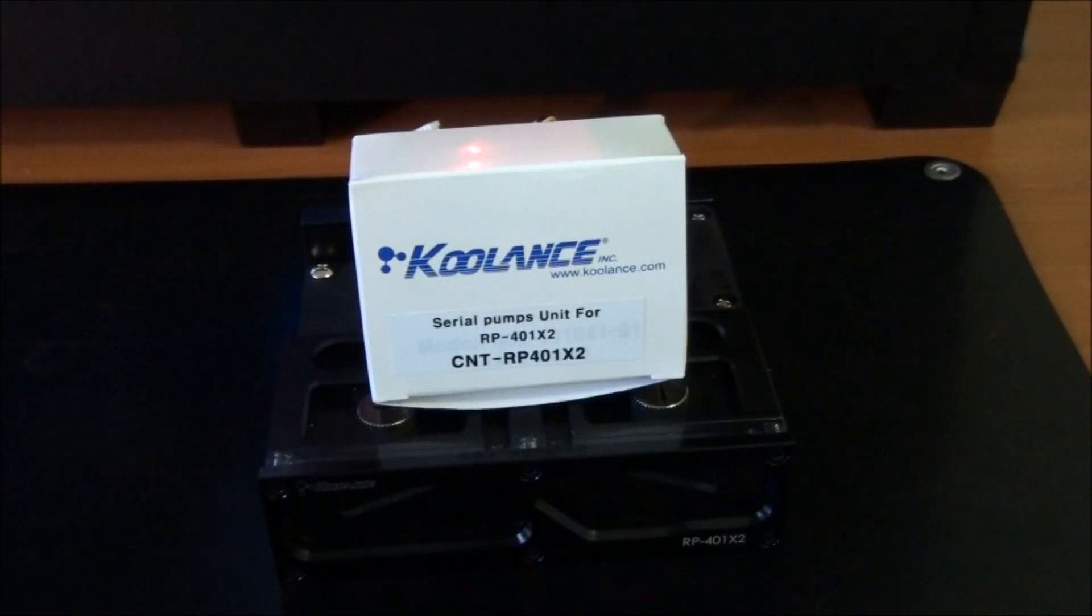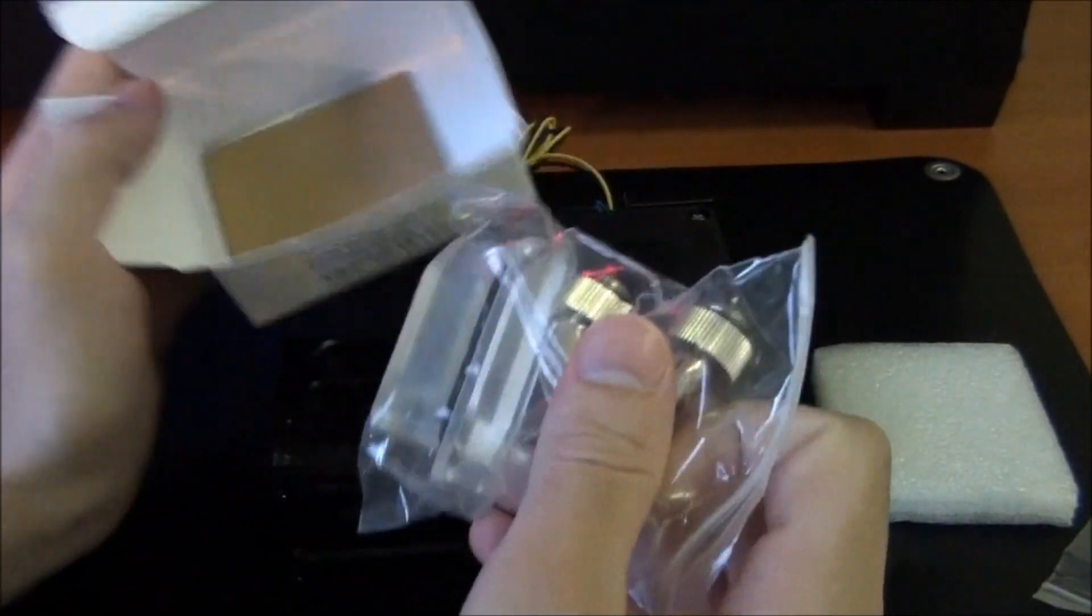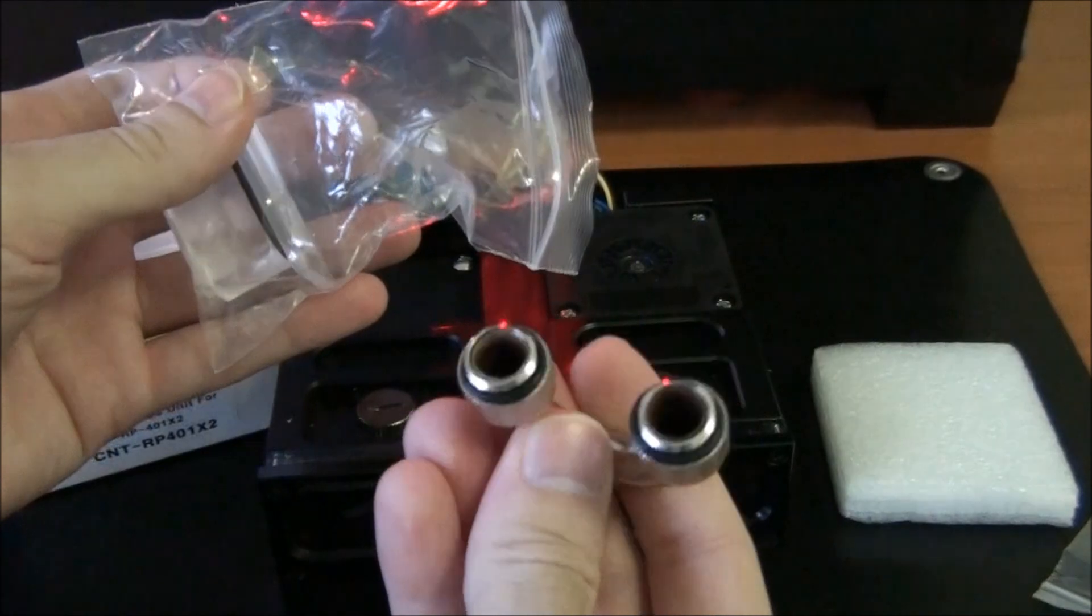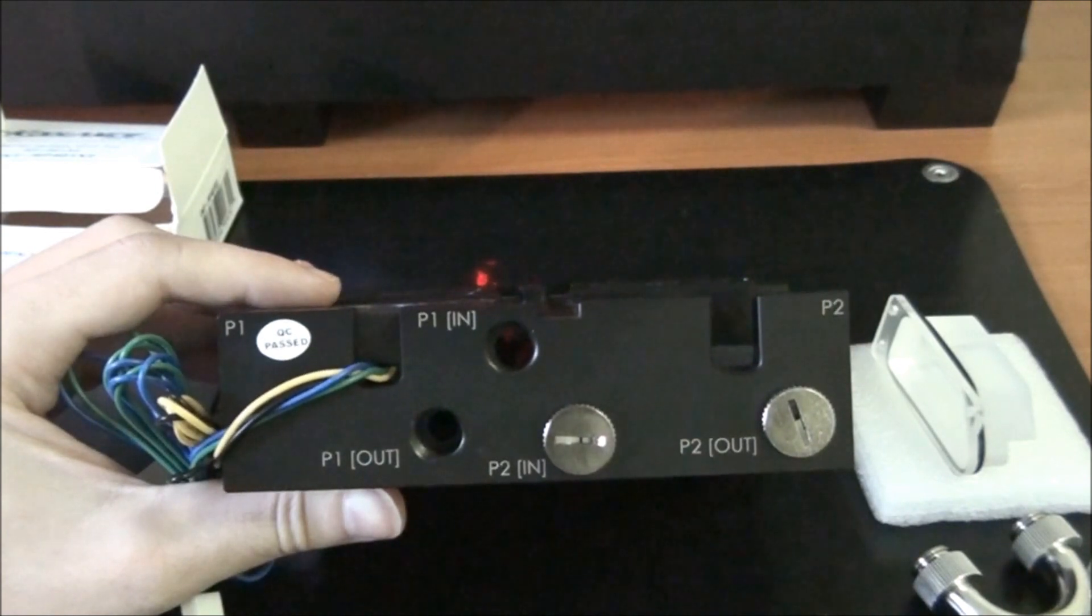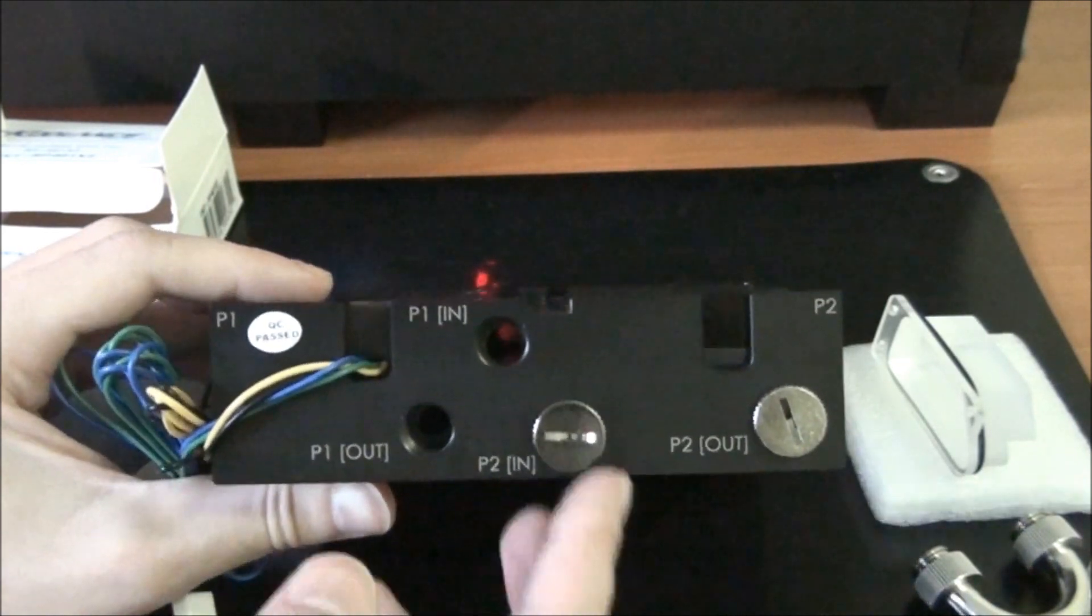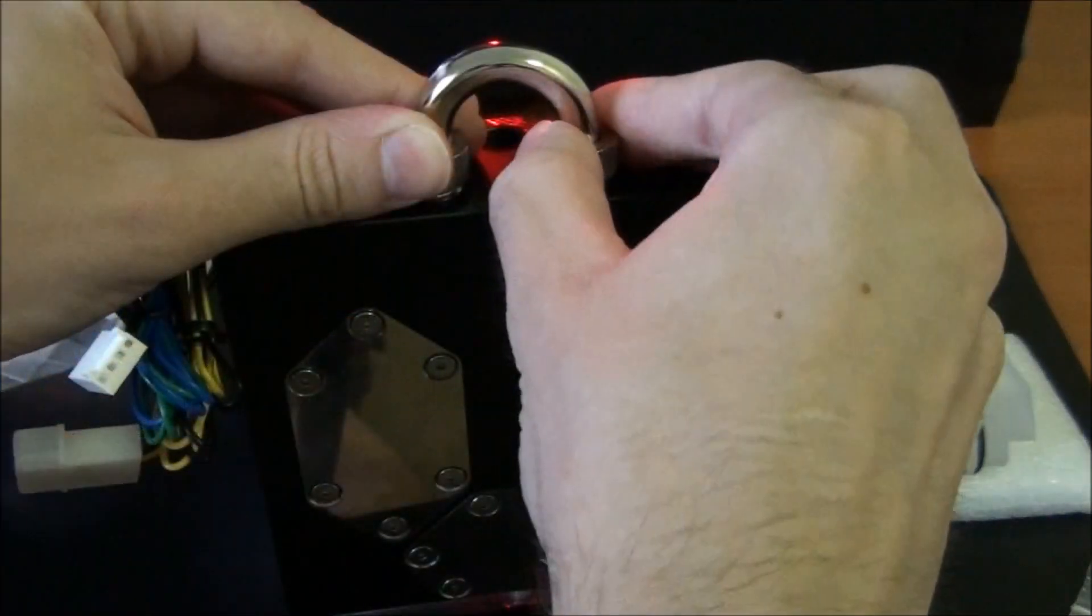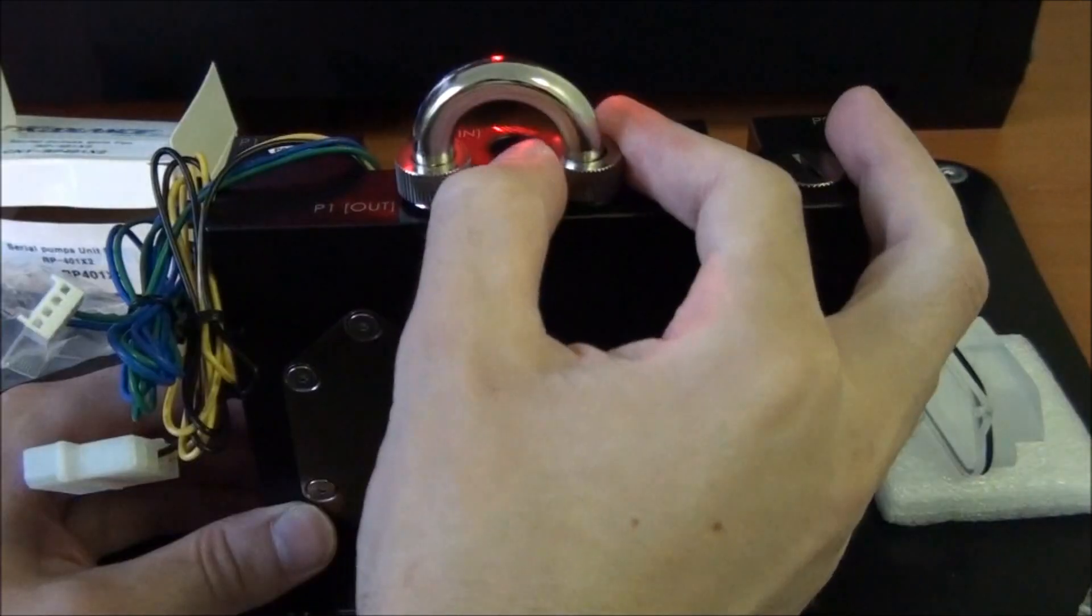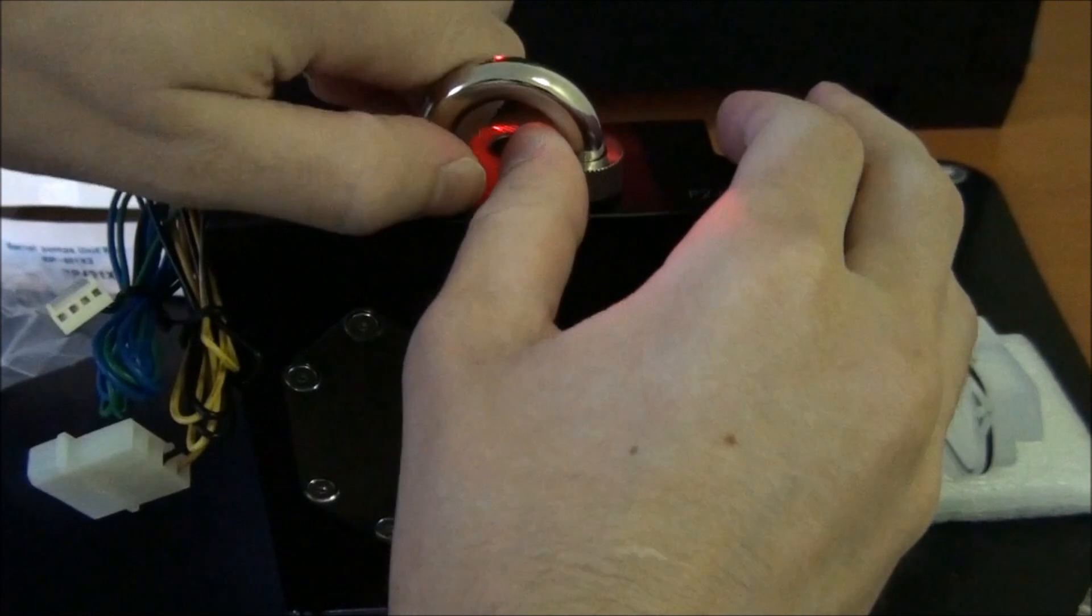Now we're going to be installing the Coolance CNT RP401X2 optional extra onto the reservoir. What this component is actually for is improving flow when using serial pumps. You get three Allen key bolts. You also get a 180 degree piece of tubing, and this piece of acrylic. The 180 degree piece of tubing gets installed onto the back of the reservoir here. You'll probably need a screwdriver to undo these. This gets installed here, so it goes from pump one out to pump two in. This was extremely tight for me. You may need to use a pair of multi-grips or something like that to tighten them up.